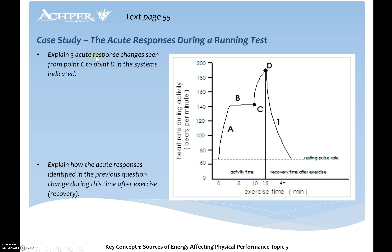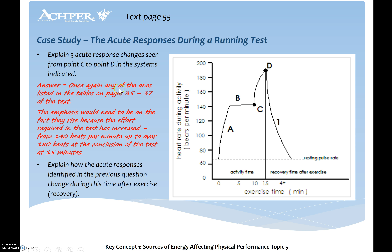Explain three acute responses seen from point C to D in the systems indicated. With increased heart rate, we see an increased breathing rate. We'll probably also see increased perspiration rate, OBLA, muscle enzyme activity, and increased motor unit recruitment — all those sorts of things.